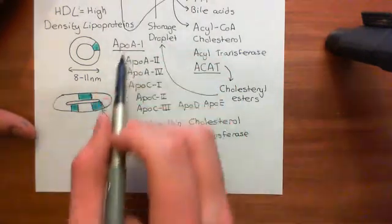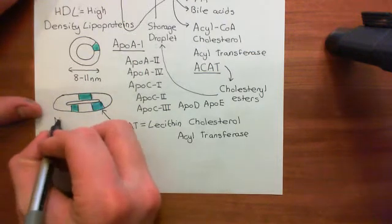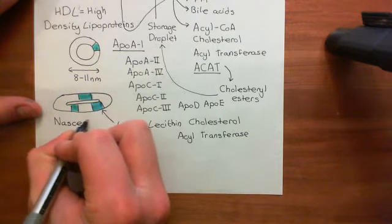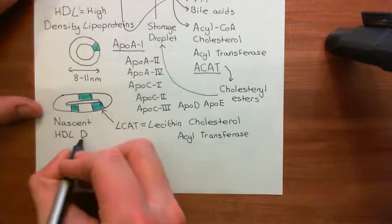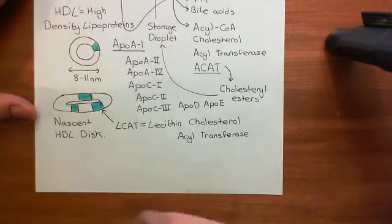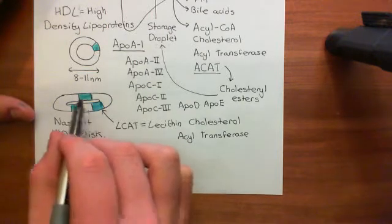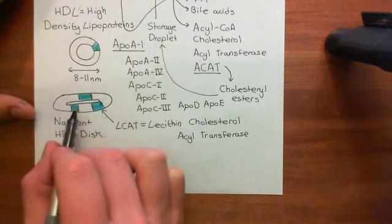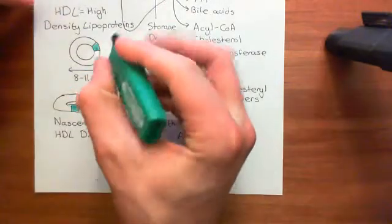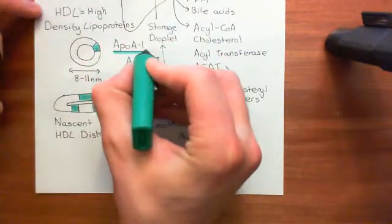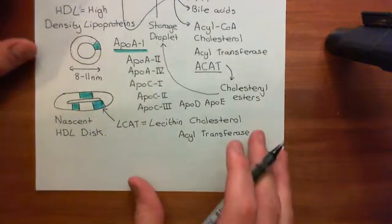HDL is synthesized by the liver, and its structure starts off in this disc shape — this is called a nascent, or newly made, HDL molecule, or a nascent HDL disc. At the moment there is nothing in the core; you just have the phospholipid monolayer with the apolipoproteins, mainly apolipoprotein A1, and then this special enzyme, lecithin cholesterol acyltransferase, also within the phospholipid monolayer.